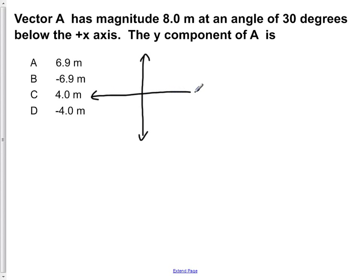So here we have our axes. Vertical is the y-axis, horizontal is the x-axis. We now have a vector here at the origin, and it's making an angle of 30 degrees below the x-axis.